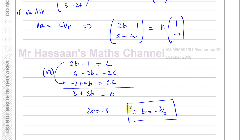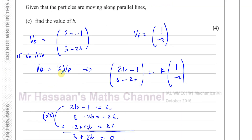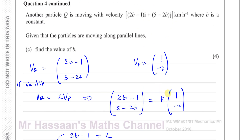So b equals minus 3/2. When vectors are parallel, they can be expressed as multiples of each other — that's what we used here. Some students just do cross-multiplication: (2b minus 1) times (minus 2) equals (5 minus 2b) times 1, which is also perfectly fine and gives the correct answer. I prefer showing the steps this way because it demonstrates understanding rather than just memorising a method.